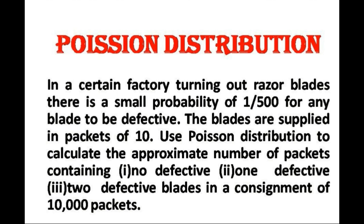Consider this problem on Poisson distribution. In a certain factory turning out razor blades, there is a small probability of 1 divided by 500 for any blade to be defective. The blades are supplied in packets of 10. Use Poisson distribution to calculate the approximate number of packets containing no defective blades, one defective, and two defective blades in a consignment of 10,000 packets.